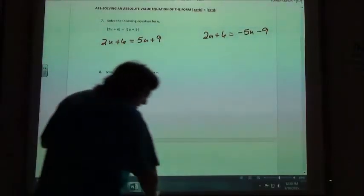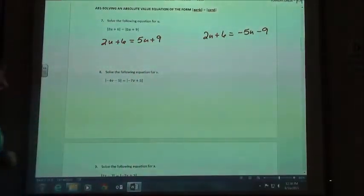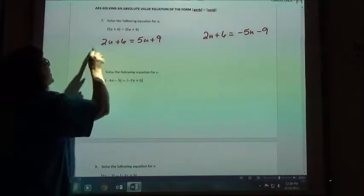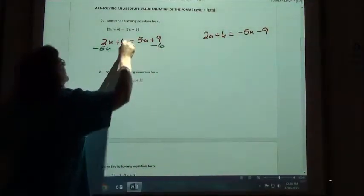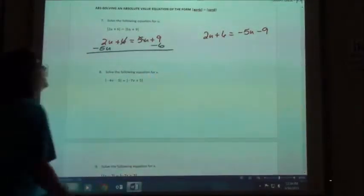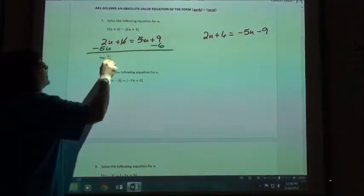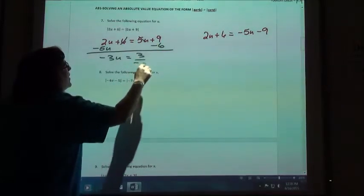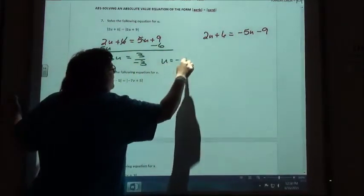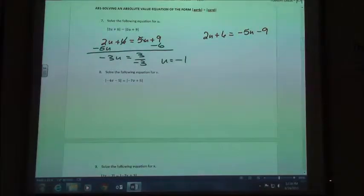And then, of course, I solve those like I solve every other equation. So I'm going to go ahead and subtract my 5u to move it over and subtract my 6 to move that to the opposite side. So 2 minus 5 gives me negative 3u, 9 minus 6 is 3, and when I divide, negative 1 is one of my answers.